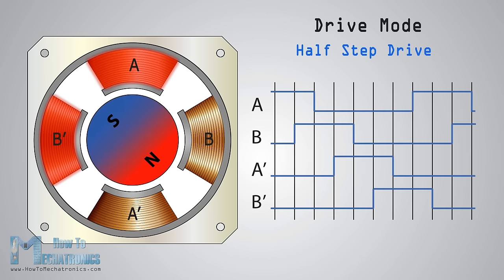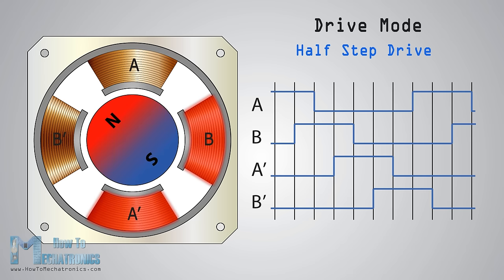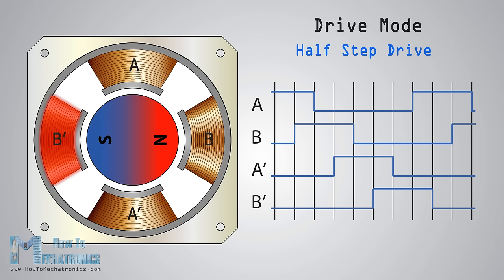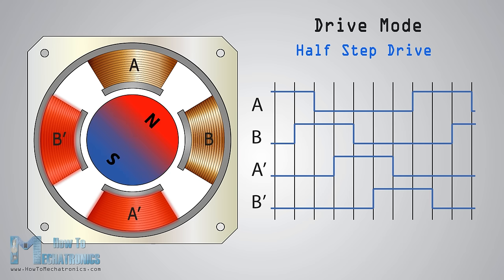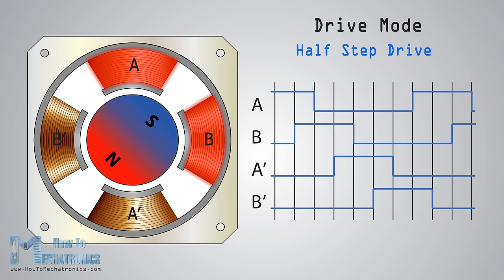For increasing the resolution of the stepper, we use the half step drive mode. This mode is actually a combination of the previous two modes. Here we have one active coil followed by two active coils, then again one active coil followed by two active coils, and so on. With this mode, we get double the resolution with the same construction. Now the rotor makes a full cycle in eight steps.